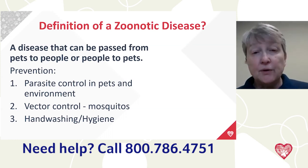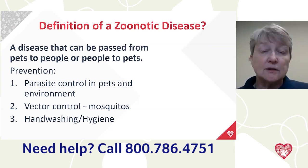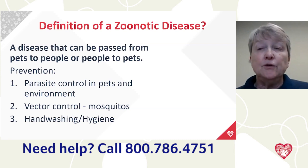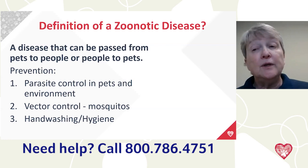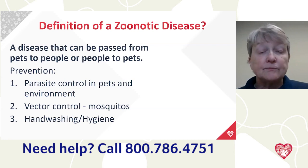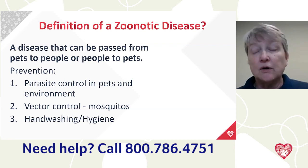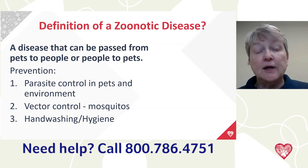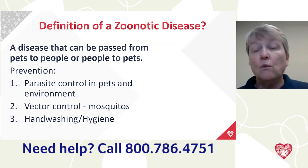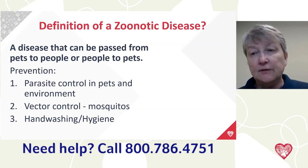People can even get heartworm — it's pretty rare, but it happens. People can get many of the intestinal parasites we'll talk about today. So for your reputation and the health of the people you're selling pets to, you need great parasite control. You also need vector control for mosquitoes, ticks, and fleas, which are all vectors of disease. Use good hand washing and hygiene, keep the yard and kennel picked up, and don't leave feces lying around.